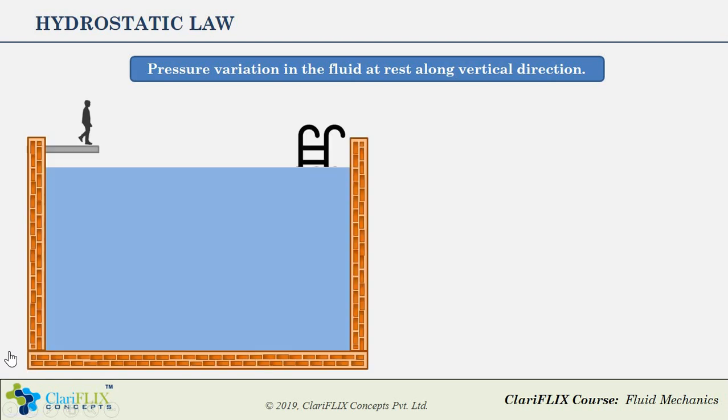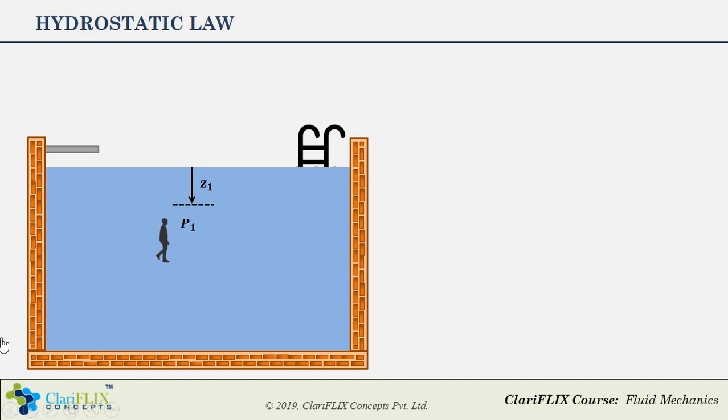Say for instance, on one sunny day you went to a swimming pool and jumped in with the intention to touch the bottom wall and come up again. During your journey, at a depth of Z1 meters from the water surface, the pressure felt by your nose is P1 Pascal. Further at a depth of Z2 meters from the surface, the pressure felt is P2 Pascal.